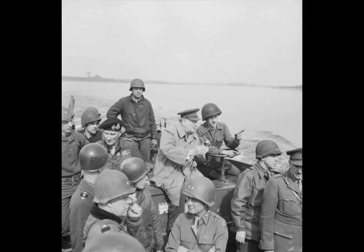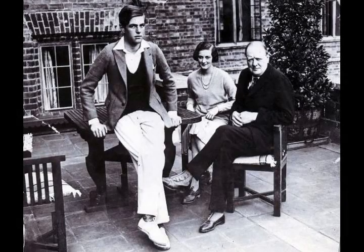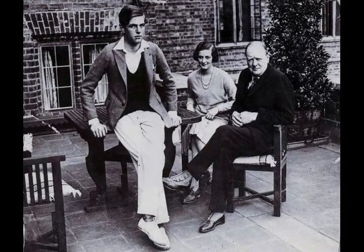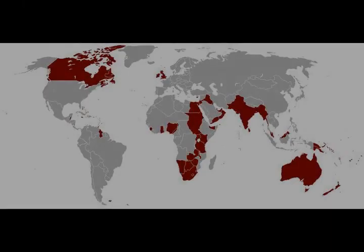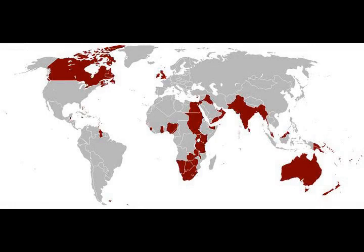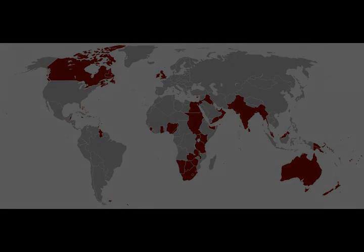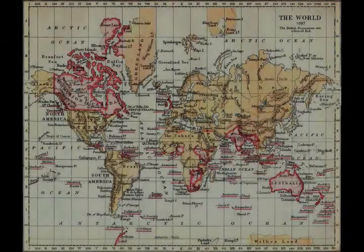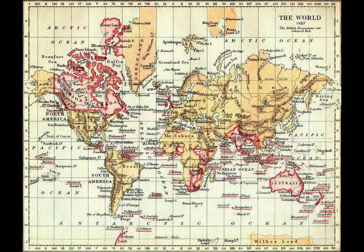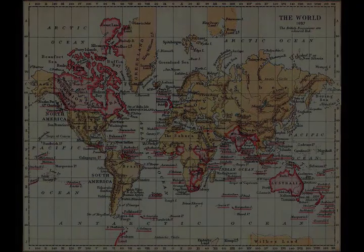Asquith succeeded Campbell-Bannerman on 8 April 1908 and, four days later, Churchill was appointed President of the Board of Trade. Aged 33, he was the youngest cabinet member since 1866. Newly appointed cabinet ministers were legally obliged to seek re-election at a by-election and on 24 April, Churchill lost the Manchester North-West by-election to the Conservative candidate by 429 votes. On 9 May, the Liberals stood him in the safe seat of Dundee, where he won comfortably.